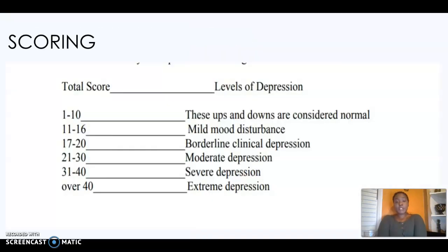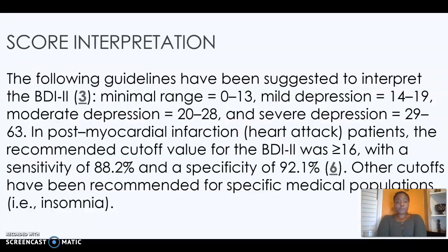Here is the scoring guide. If someone were to score 1 to 10, these are ups and downs and are considered normal and not depressed. If someone were to score 31 to 40, they would be categorized with severe depression. A normal range would be 0 to 13, mild depression would be 14 to 19, moderate would be 20 to 28, and severe would be 29 to 63.